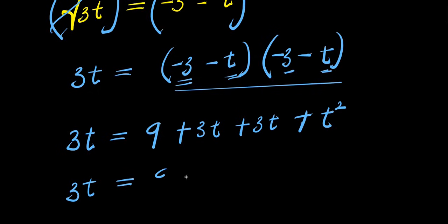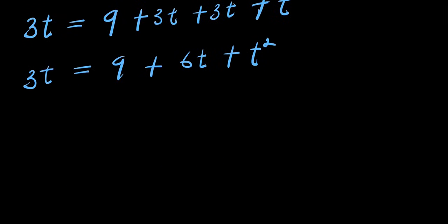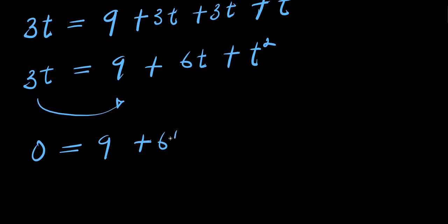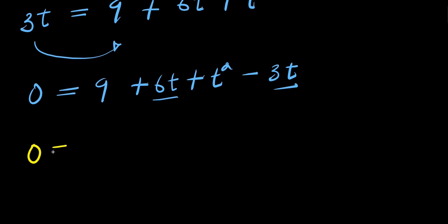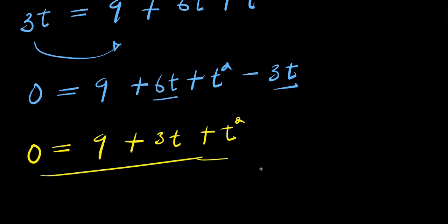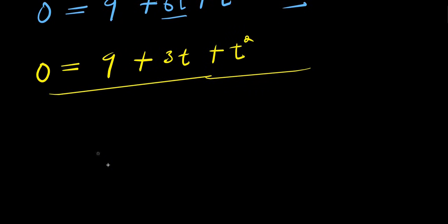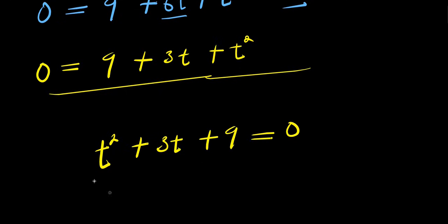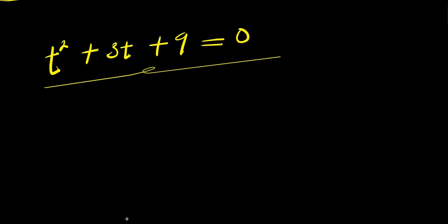Moving three t over to the right side, we get zero equals nine plus six t plus t squared minus three t. Rearranging this gives us t squared plus three t plus nine equals zero. This is the quadratic equation we are going to solve, and we will solve it using the quadratic formula method.